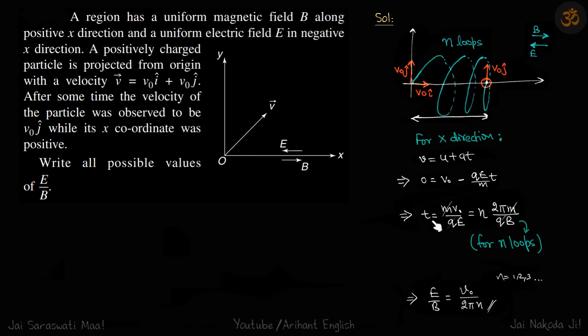From here we get t equals mv0 by qE, which we will equate to the time period of n loops: n times 2πm by qB.